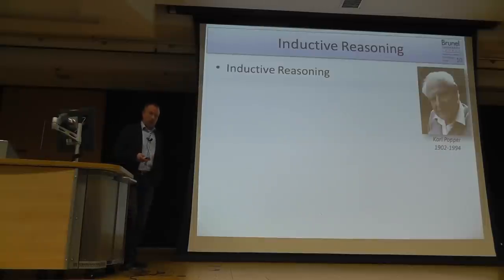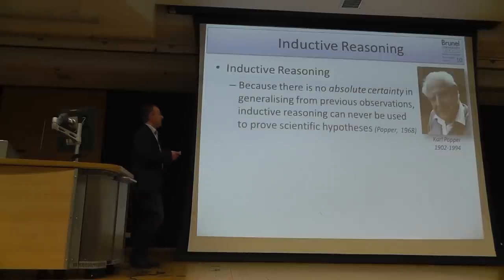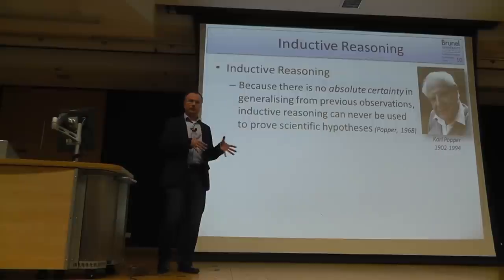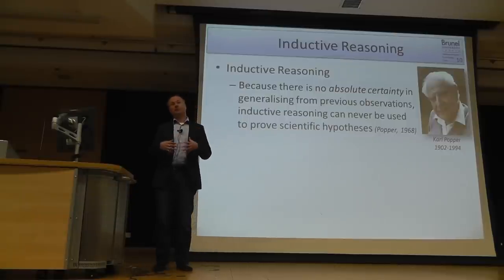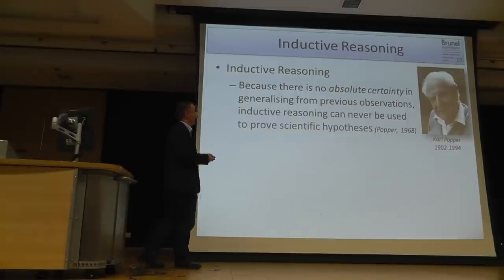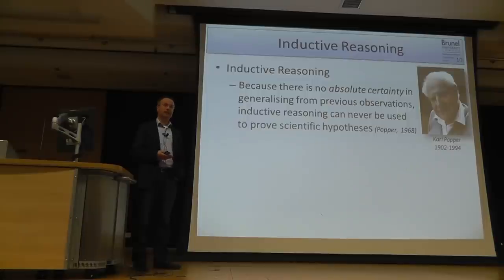One of the great philosophers of science, Karl Popper, made a statement about inductive reasoning. He said that in inductive reasoning there is never an absolute certainty about things, because our conclusion derives from examples from the past. We never can be sure whether the future will be the same by the logic we apply. So he said we should never use inductive reasoning to prove scientific hypotheses.